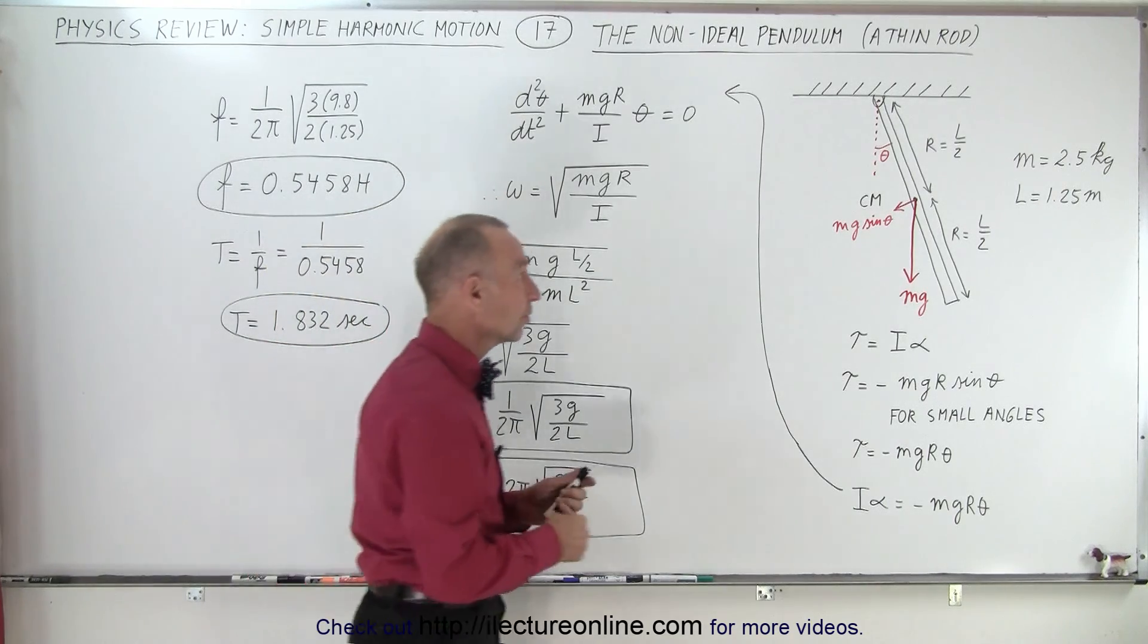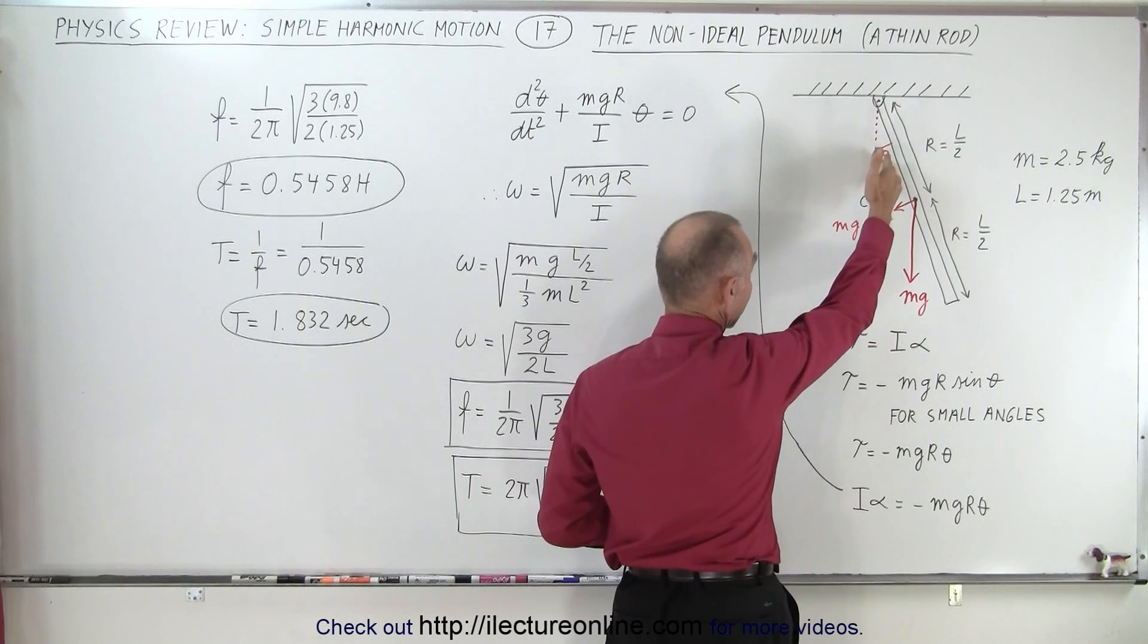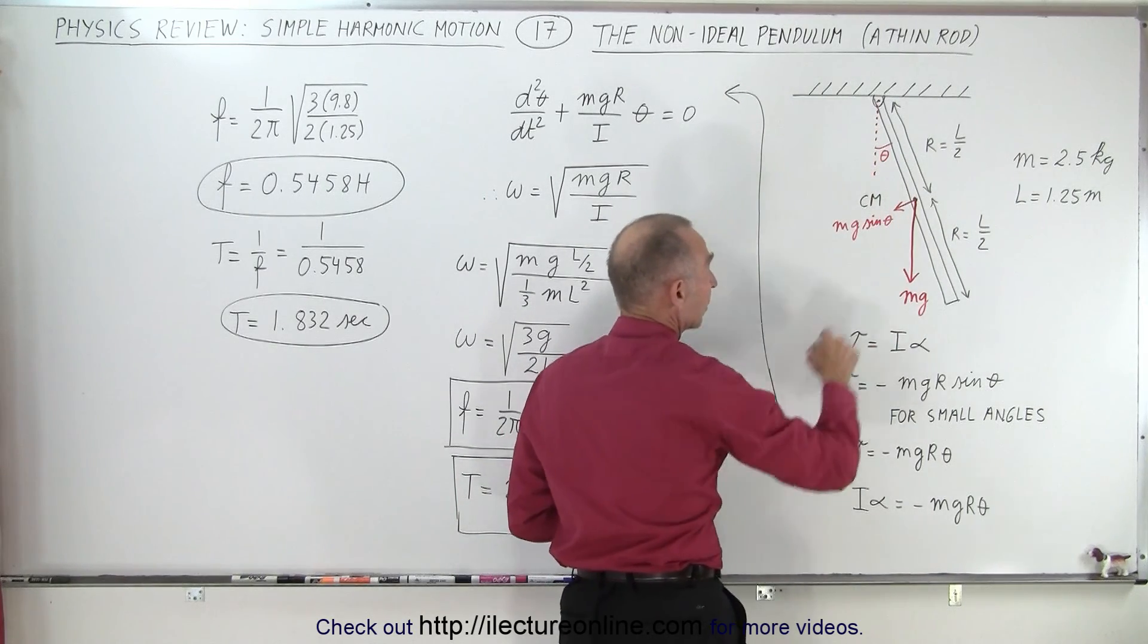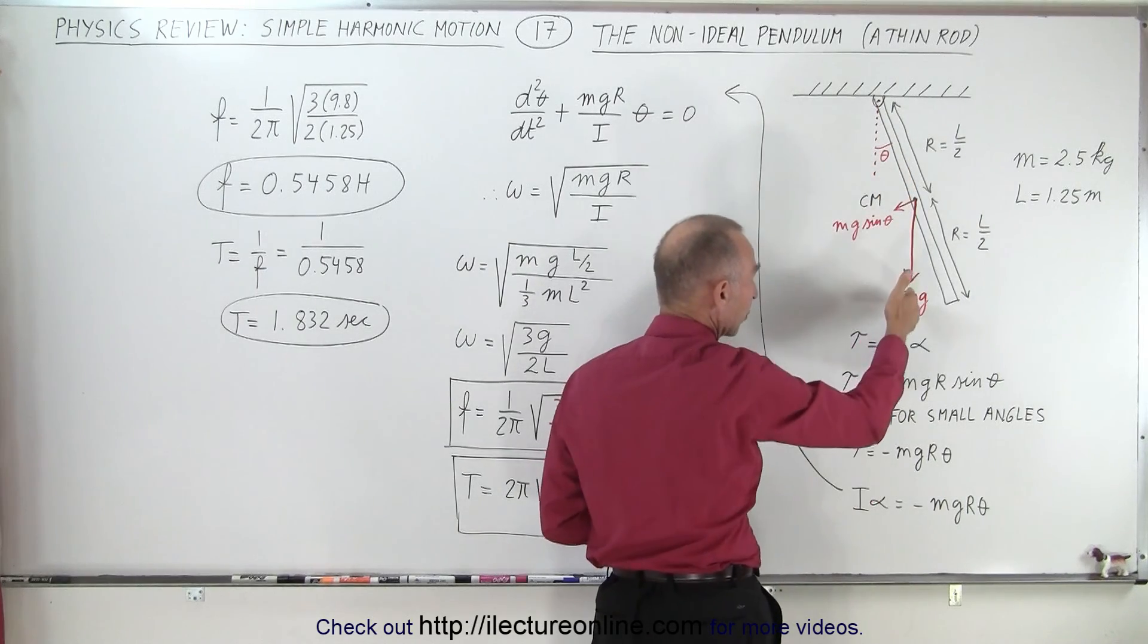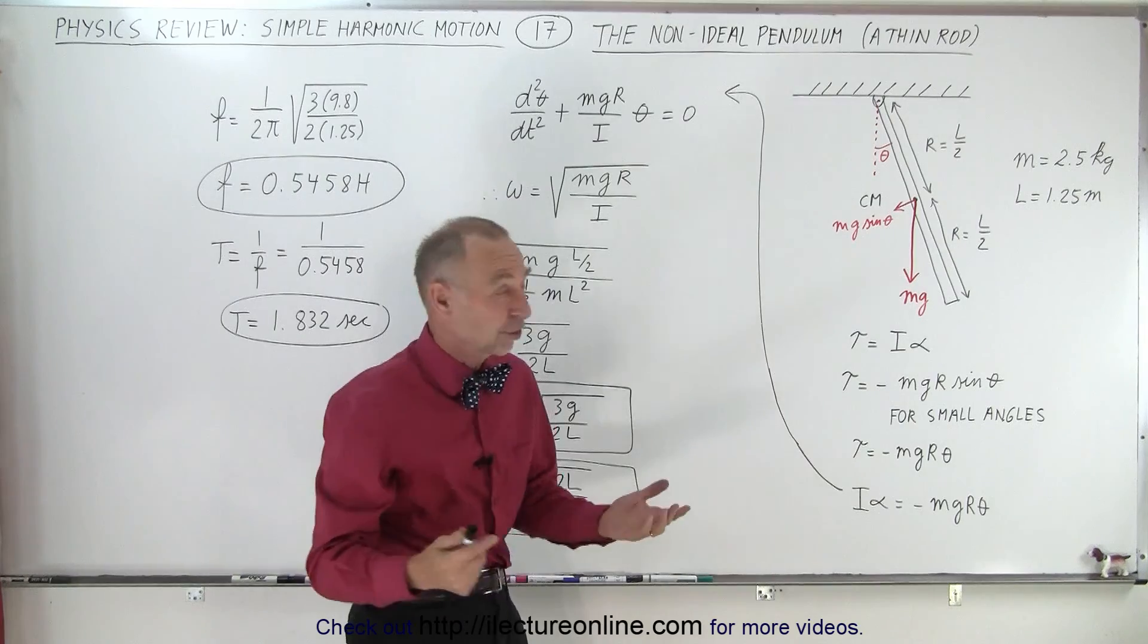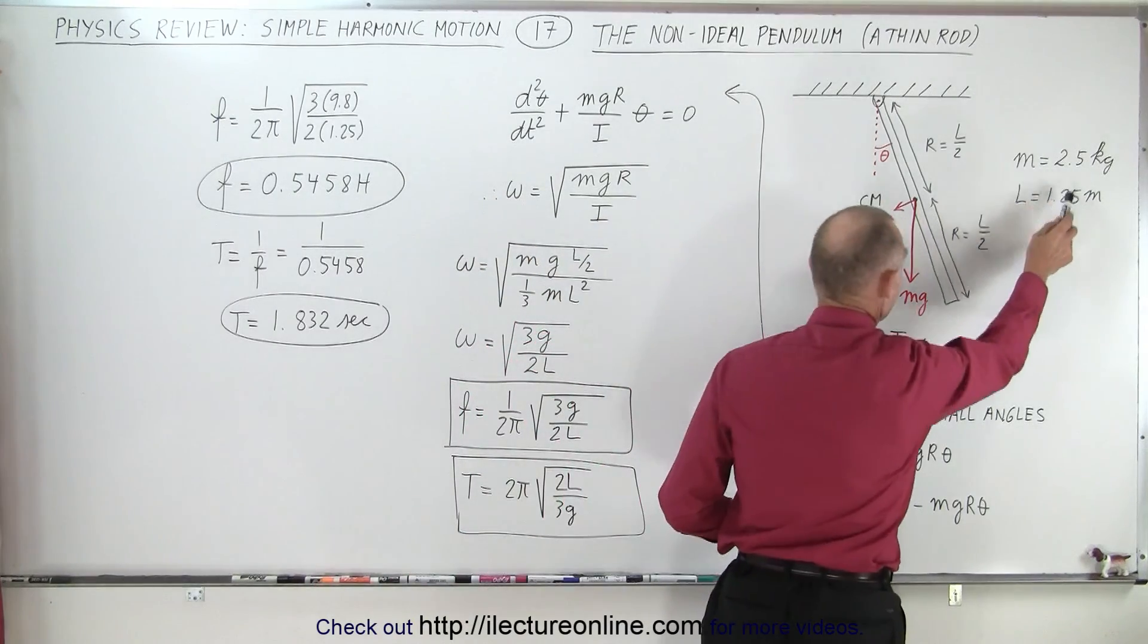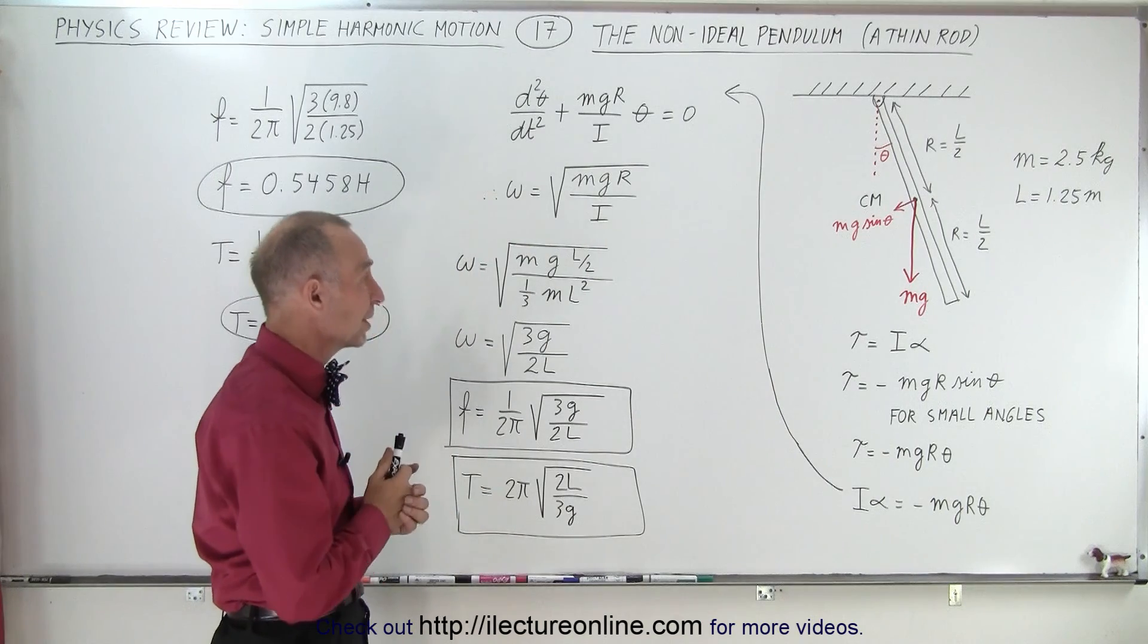We take a look at this and notice that we have a rod swinging back and forth. At some point it makes an angle theta with the vertical. The force acting on the rod will act at the center of mass. We have the weight of the rod and we have the restoring force mg sine theta. Let's assume that the mass of the rod is 2.5 kilograms and the length is 1.25 meters.